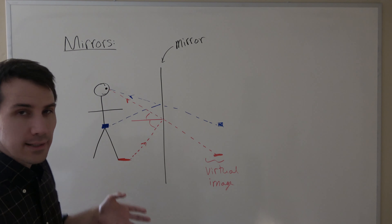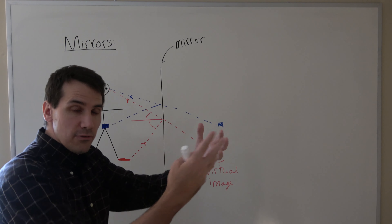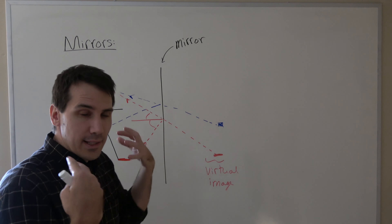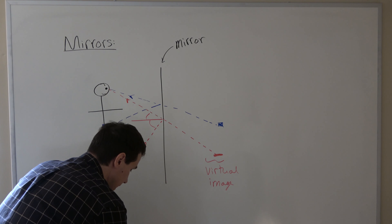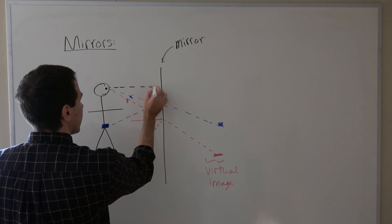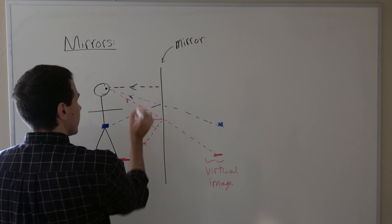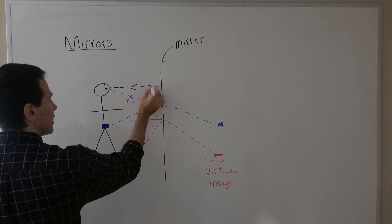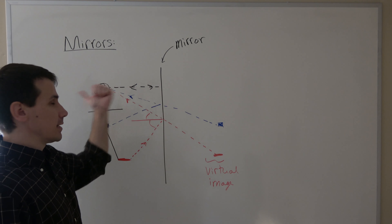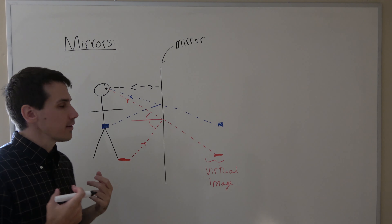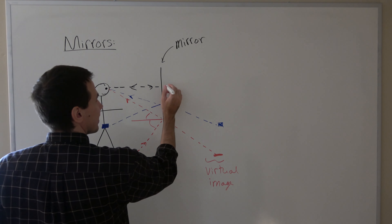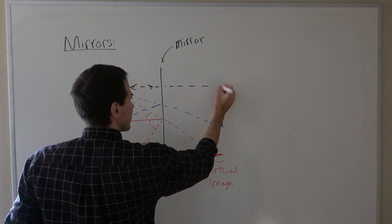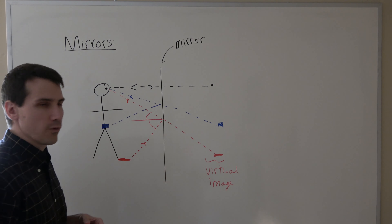Finally, let's think about light that leaves from your eye and then comes back. Light that bounces off your eyes hits the mirror and then comes back to you. If you want to see that light, it had to come from your eye, hit the mirror, and then come straight back — absorbed by your eyes. Since you believe the light followed a straight-line path, you think that your eyes are over here on the other side of the mirror.